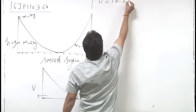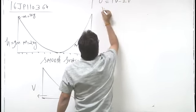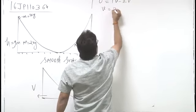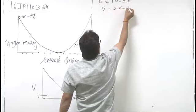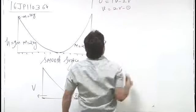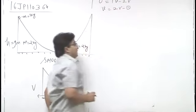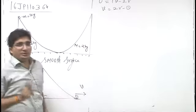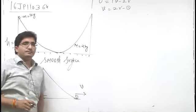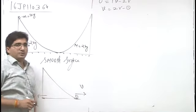So momentum along x axis: 1·v − 2·V = 0, giving v = 2V. This is the first equation — the relation between the velocities of the two objects.